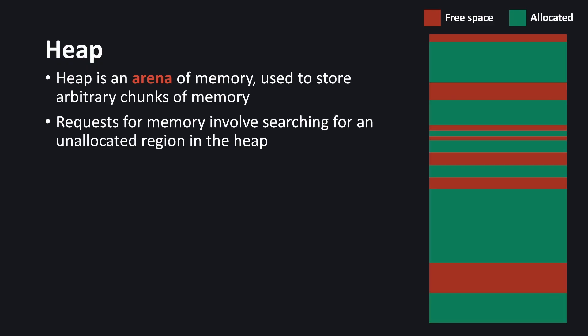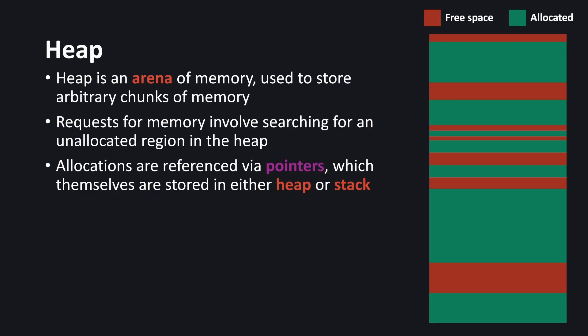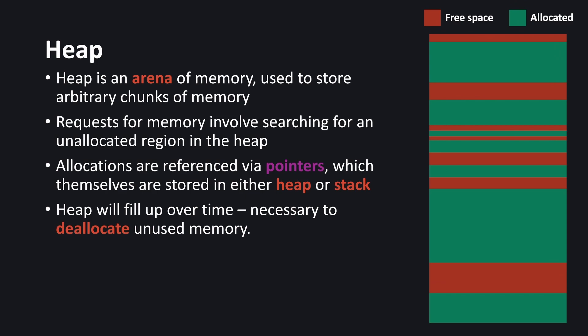The allocations made are referenced by pointers, which reference the starting memory address of your allocated block. Usually there's a metadata field bundled alongside the pointer that helps track the size of the allocation. Pointers can be stored on the heap so objects within the heap can point to memory elsewhere in the heap, or you can store pointers directly on the stack to reference heap memory. Using pointers is quite efficient — if you want a function to access that memory, you can simply pass a pointer rather than copying all the data. One problem with the heap is that it fills up over time as more allocations are made, eventually making it necessary to deallocate unused memory.